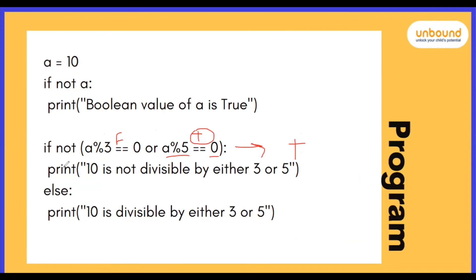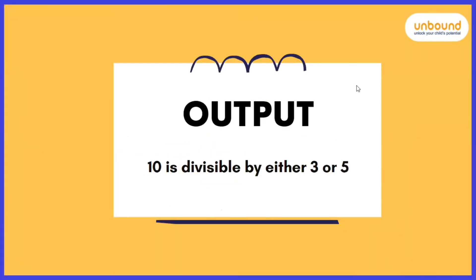Now remember, we have one more operator here. It's NOT and NOT says whenever you get a value in true, you have to reverse it and you will get a value of false. So as the condition got false, it will skip this statement and will go to the else part. And we'll print 10 is divisible by either 3 or 5 as an output.